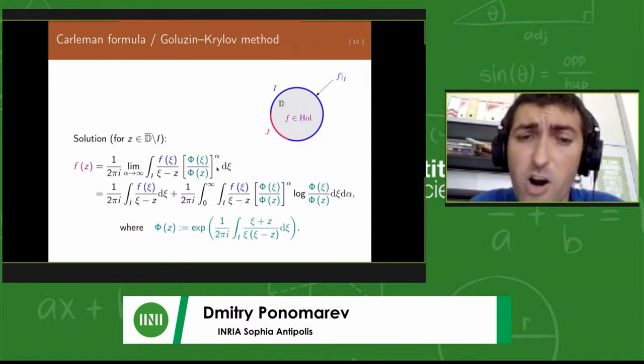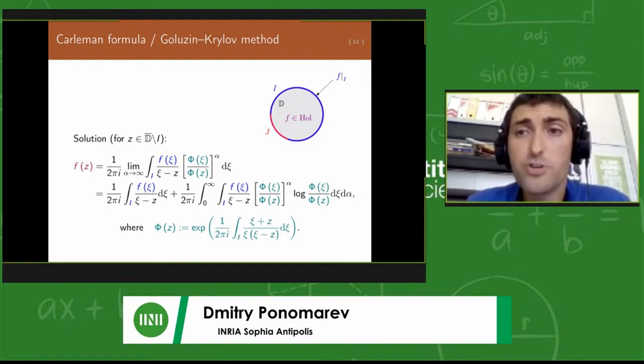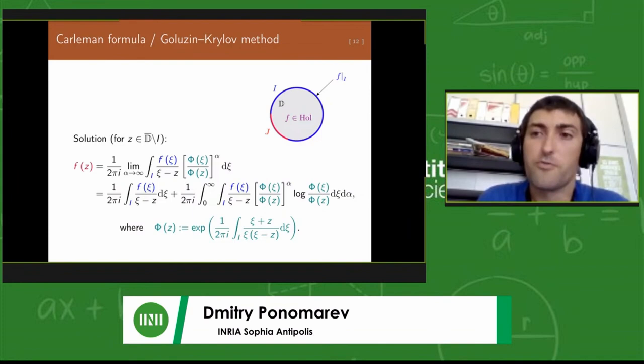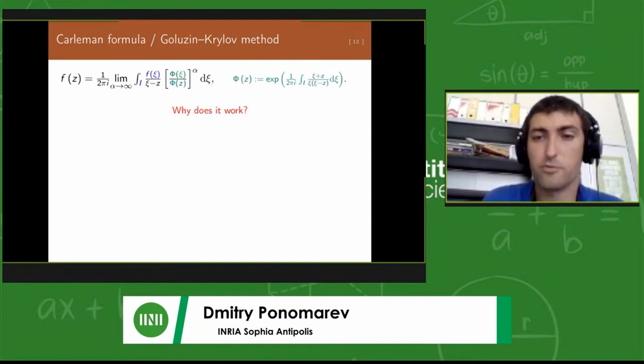If you don't like this limiting character of this formula, you could get rid of the limit at the expense of introducing another integration. These are absolutely equivalent representations. The function phi that appears here can be written explicitly for the case of unit disc. This is the so-called quenching function.